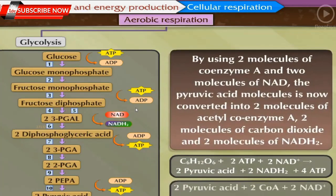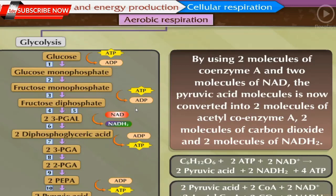By using two molecules of coenzyme A and two molecules of NAD, the pyruvic acid molecules formed during glycolysis are converted into two molecules of acetyl coenzyme A, two molecules of carbon dioxide, and two molecules of NADH₂.